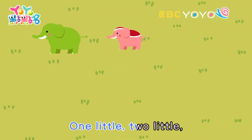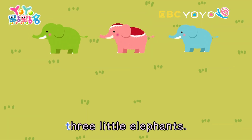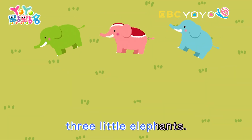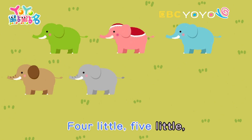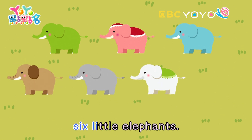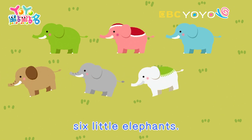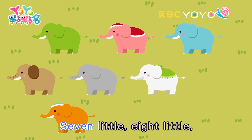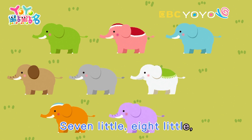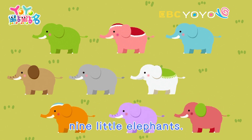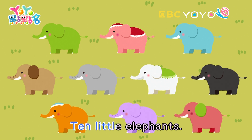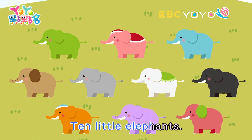One little, two little, three little elephants. Four little, five little, six little elephants. Seven little, eight little, nine little elephants. Ten little elephants.